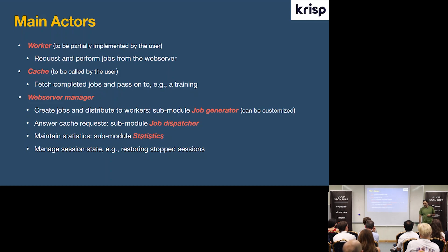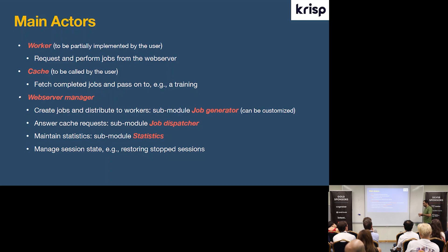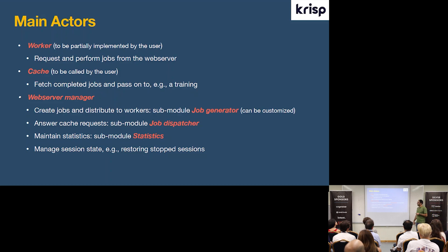Quite conveniently, since we have a web server, it can host a web page. We created a small HTML web page where we display statistics about the data generation — which computer serves data at which speed, which cache consumes data and at what speed, and so on. On this web page you can also specify and change the number of workers, which is quite convenient.